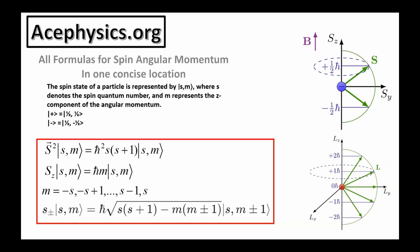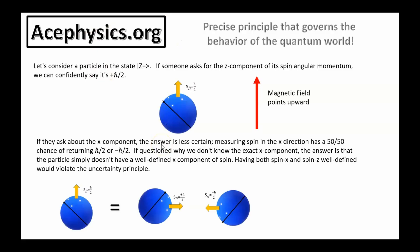Things get more complex when we start discussing measurement, which we'll cover shortly. So I have two more slides, which are a thought experiment, and these are titled the precise principle that governs the behavior of the quantum world. Let's consider a particle in the plus z state. If someone asks for the z component of its angular momentum, we can confidently say it's h bar over two. There's a magnetic field pointing upward. This is the spinning particle, and this particle is in state plus z, and if we make a measurement on this particle, we know that it's going to have h bar over two pointing upward parallel to the magnetic field.